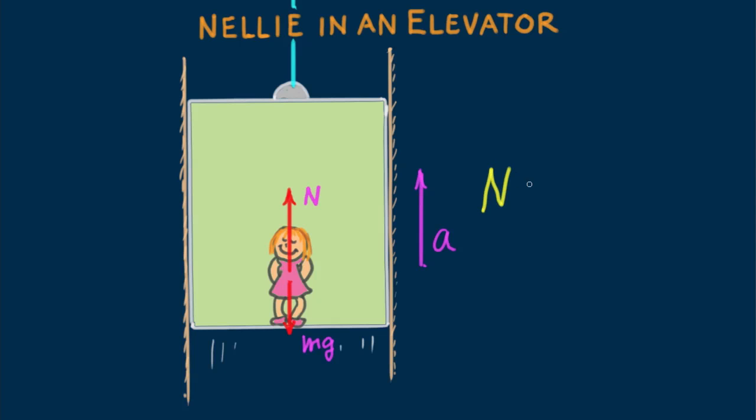Then the support force on Nellie would simply be N equals mg plus ma. Same physics, similar situation. Is this yum or what?